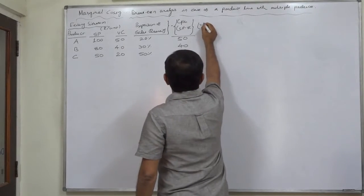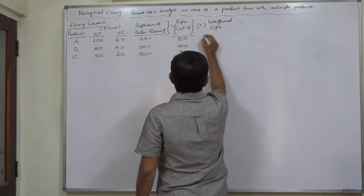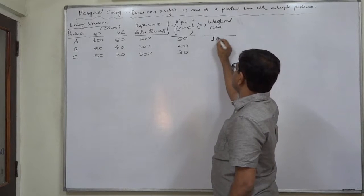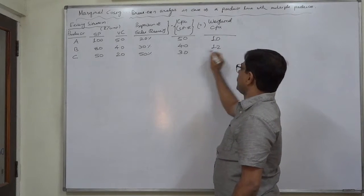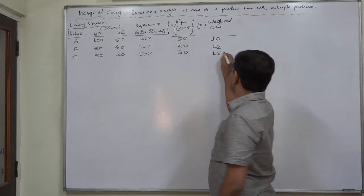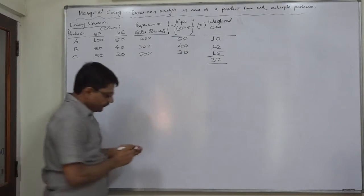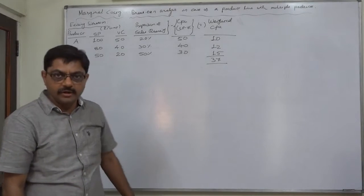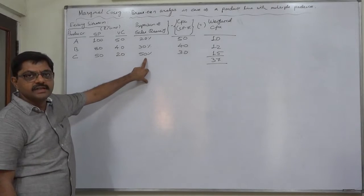That will give us the weighted contribution per unit: 20% × Rs.50 = Rs.10; 30% × Rs.40 = Rs.12; and 50% × Rs.30 = Rs.15. So the total comes to Rs.37. This amount of Rs.37 is called the weighted contribution per unit, where the percentage of sales quantity has been used as weight.